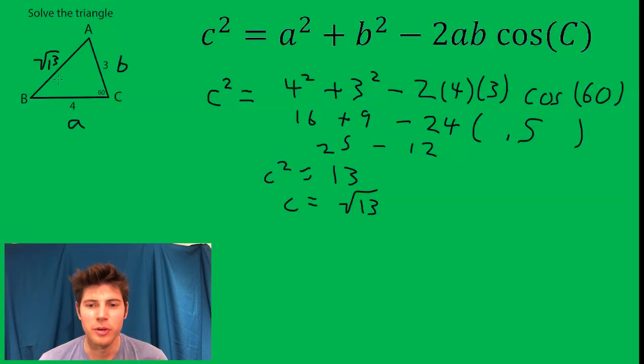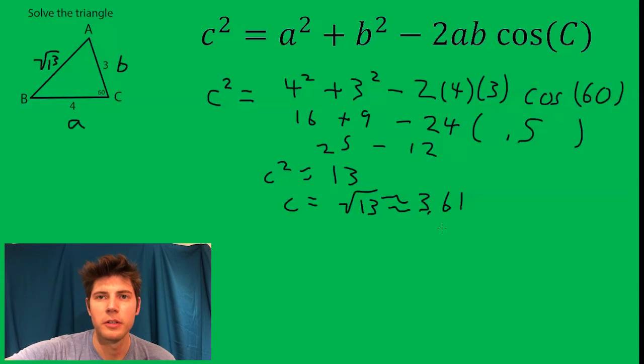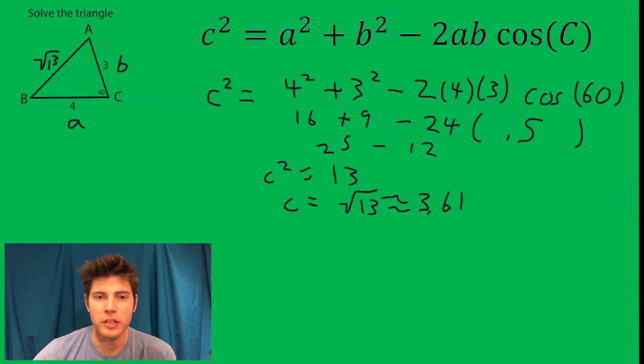Now we got little c, the square root of 13, which approximately equals 3.61. Now we have this side. We need one of these other two angles.